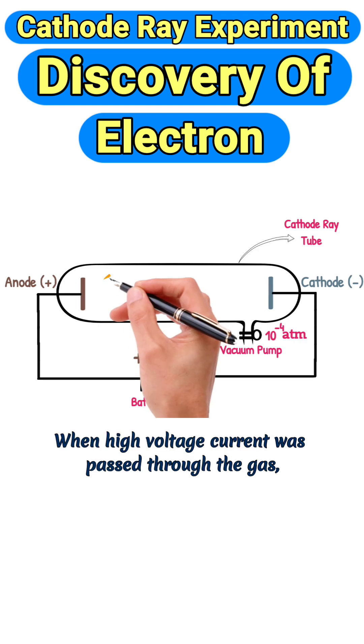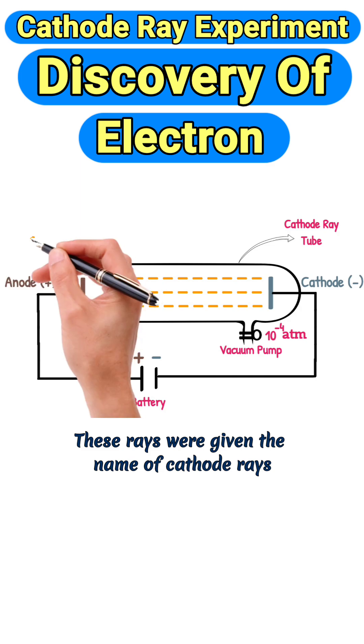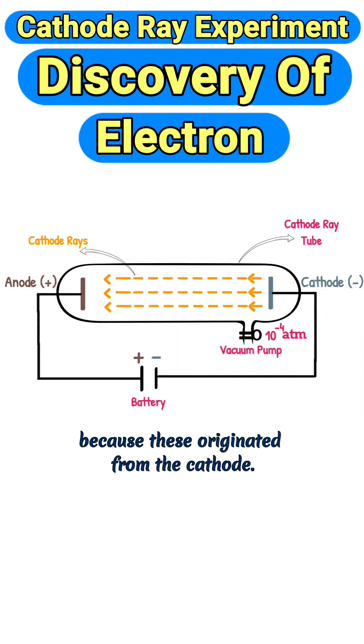When high voltage current was passed through the gas, shiny rays were emitted from the cathode which traveled towards the anode. These rays were given the name cathode rays because they originated from the cathode.